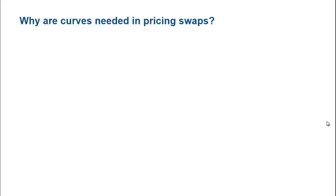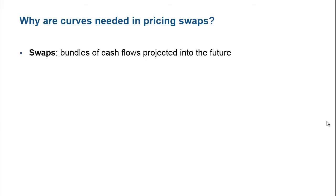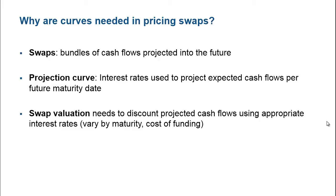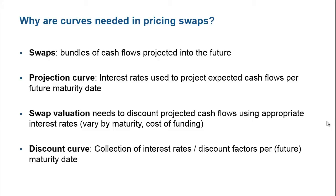Before we start, let's take a look at why interest rate curves are needed in pricing swaps. Theoretically, a swap can be viewed as a bundle of contractual cash flows projected into the future. The interest rates that are used to project these cash flows for future dates are collectively called a projection curve. In order to value a swap, you need to discount these projected cash flows using the appropriate interest rate, which varies by maturity and by cost of funding. A discount curve is the collection of interest rates that are used to discount the contractual cash flows.